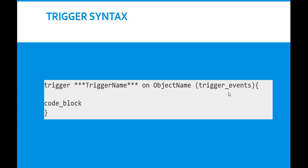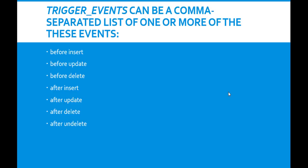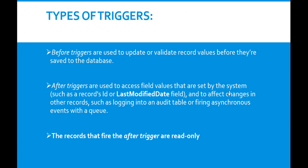The trigger events can be a comma-separated list of one or more events: before insert, before update, before delete, after insert, after update, after delete, or after undelete. Before triggers are used to update or validate record values before they are saved to the database. After triggers are used to access field values set by the system and to affect changes in other records, such as logging to an audit table or firing asynchronous events with a queue. Remember, the records that fire the after trigger are read only.